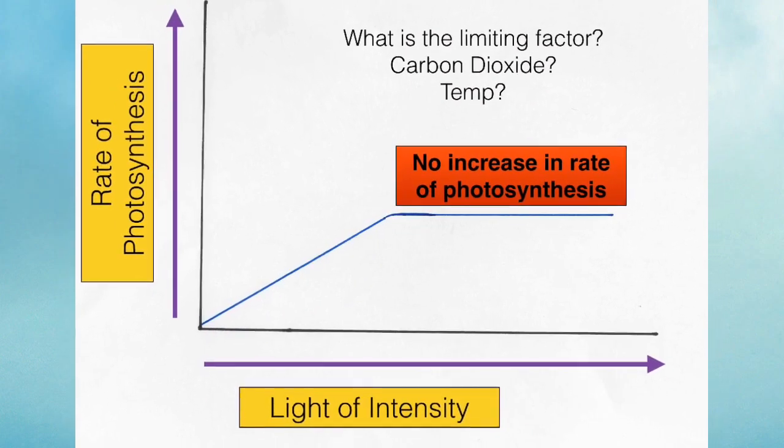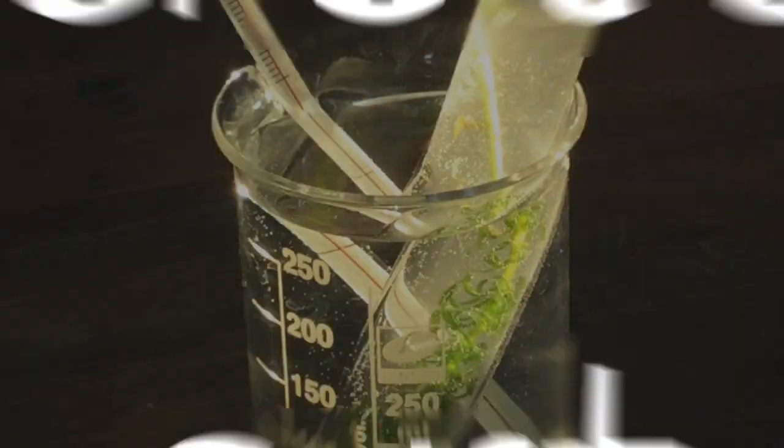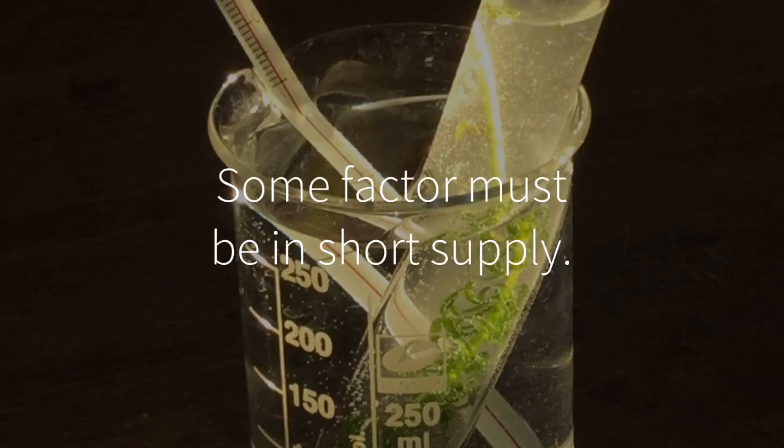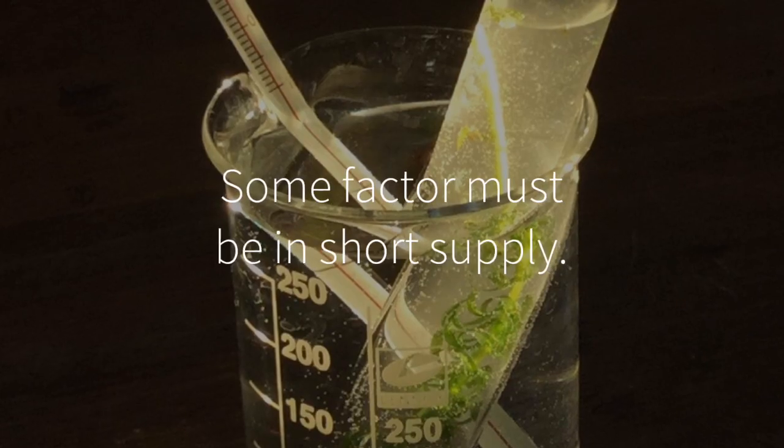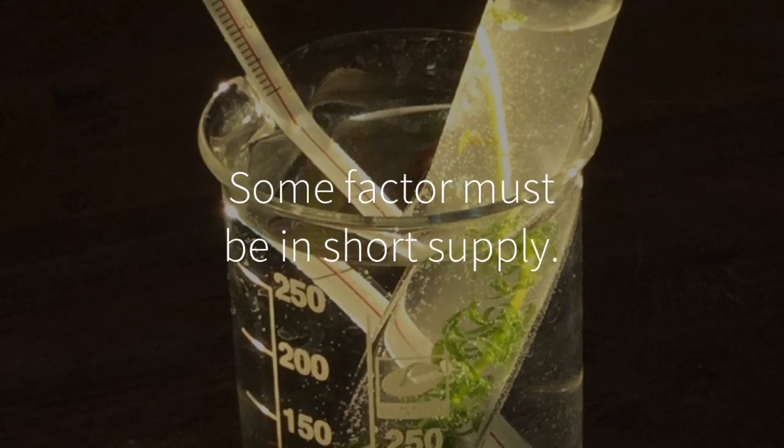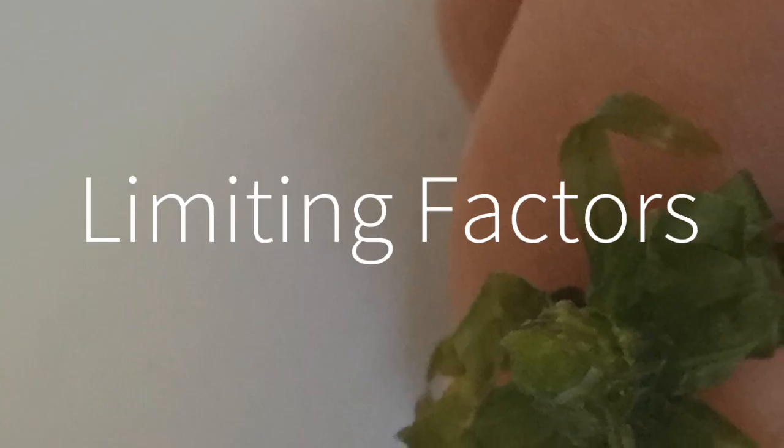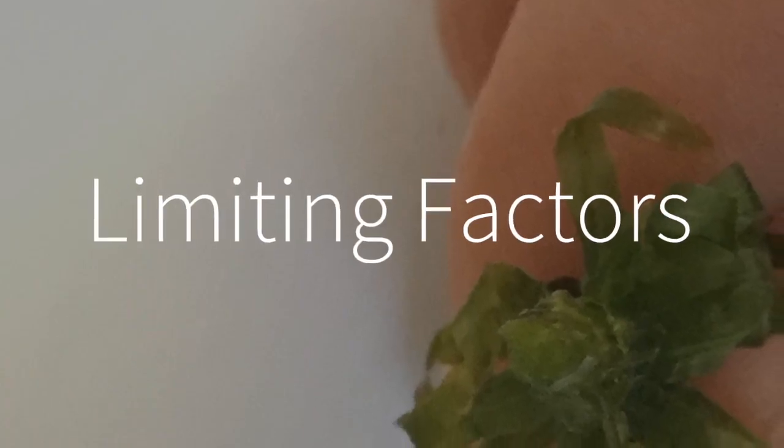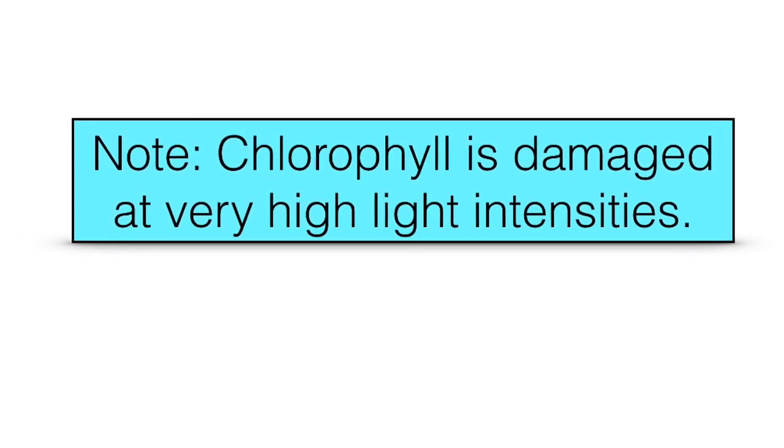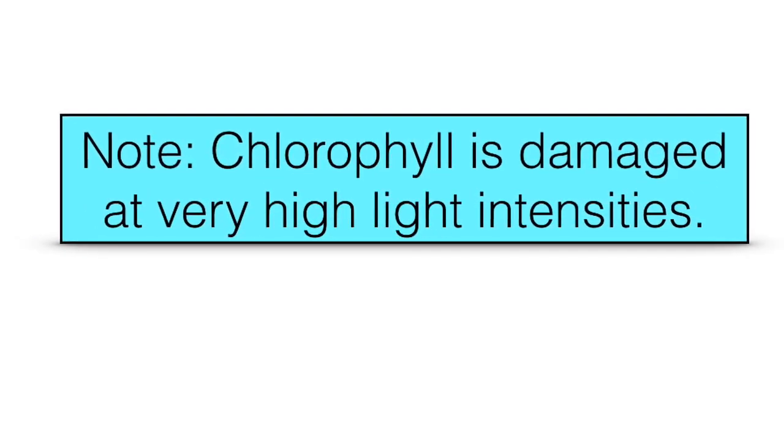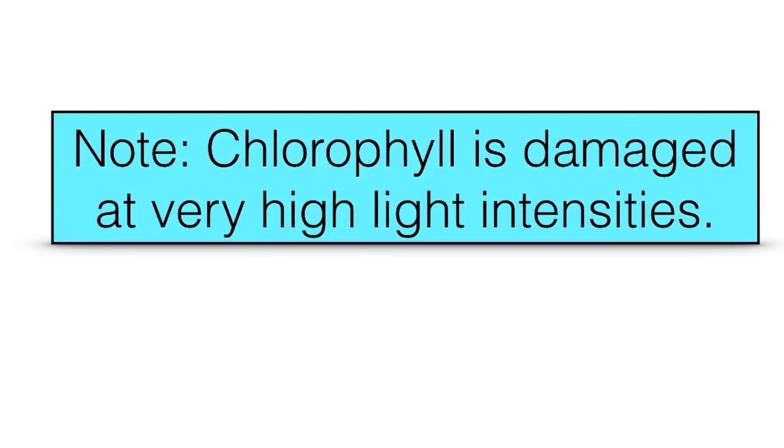Something is preventing a rise in the rate of photosynthesis. In plain English, this simply means that there is some factor which is preventing the rate of photosynthesis from increasing again, and it's not light. So there is some limiting factor. Is it carbon dioxide? There's simply not enough carbon dioxide, or is it temperature perhaps? Also bear in mind that chlorophyll is damaged at very high light intensities. That could crop up in an exam too.